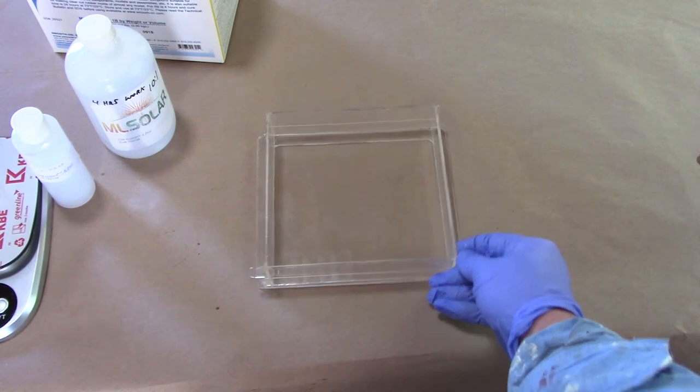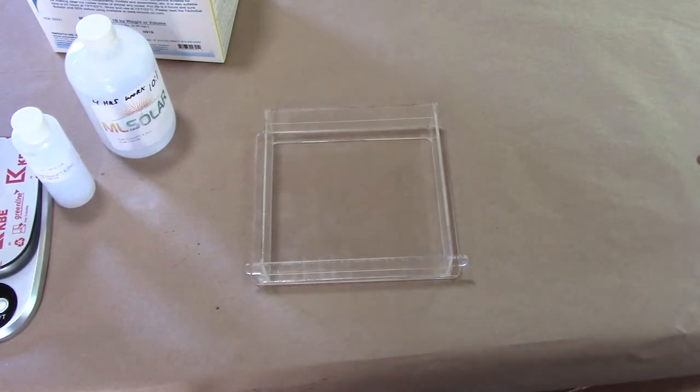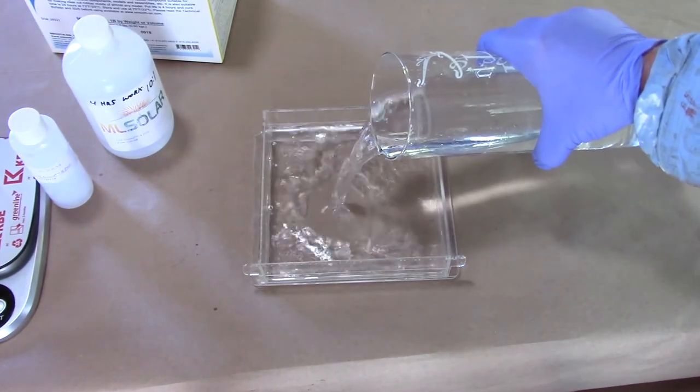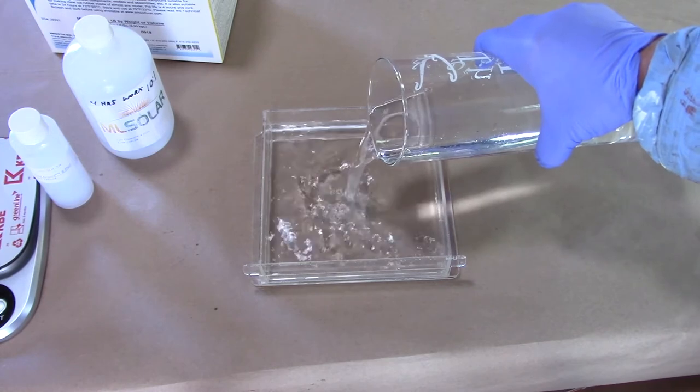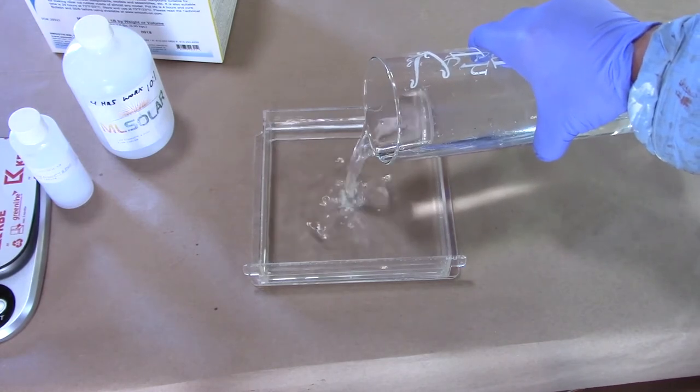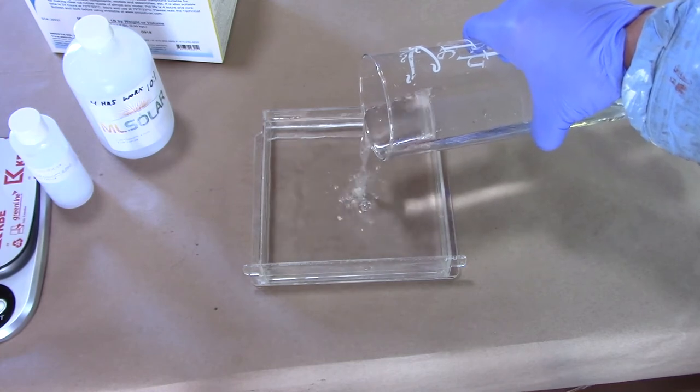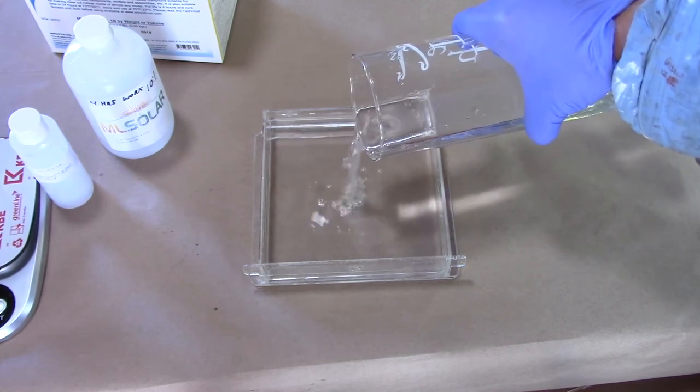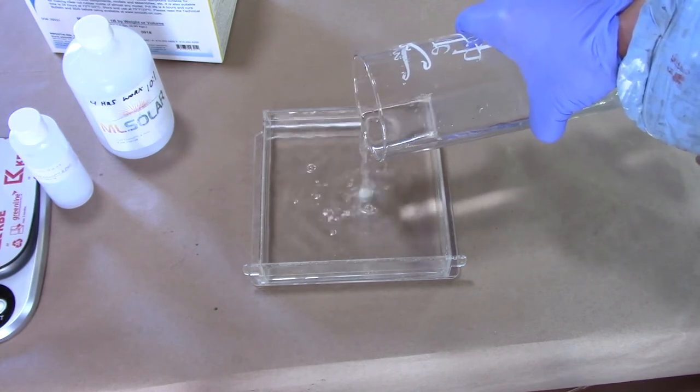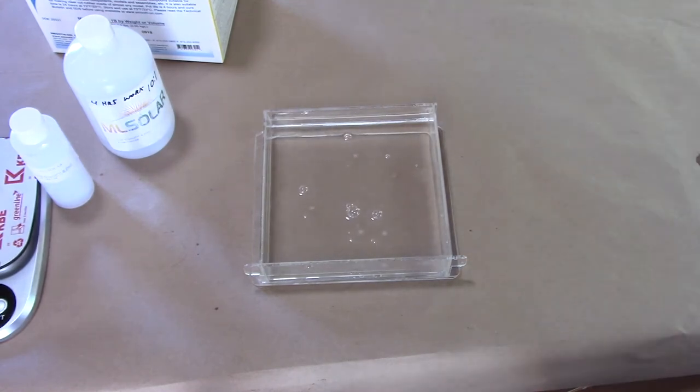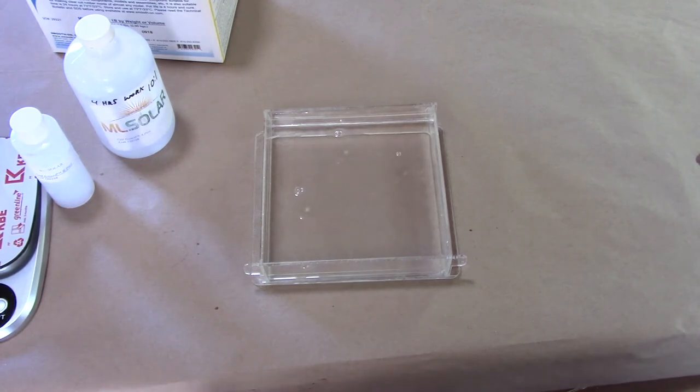Before we lay down a layer of PDMS, I want to make sure that it's watertight. Definitely don't want any leaks. So I'm just going to fill this with some water almost to the top. Because anyone with a Moai knows, when that build plate comes down, it pushes that resin almost all the way up to the top. So I'm going to fill this. And I'm just going to let this sit here for about five minutes and watch for leaks. If there's no leaks, we're ready to go on to the next stage.